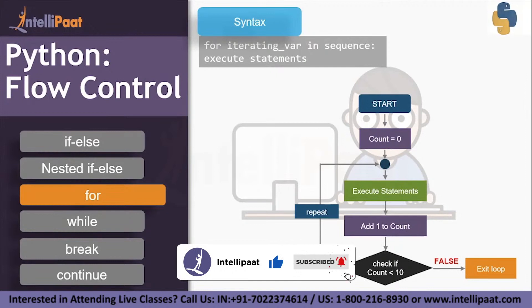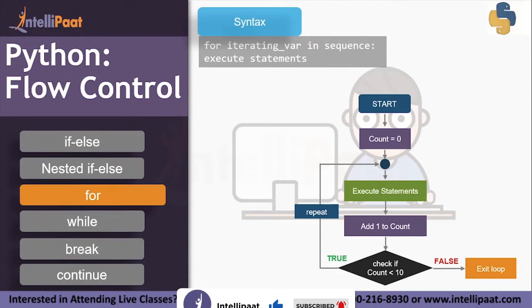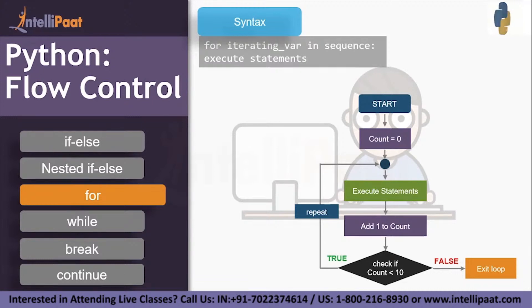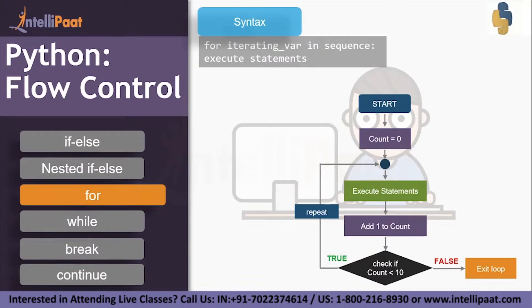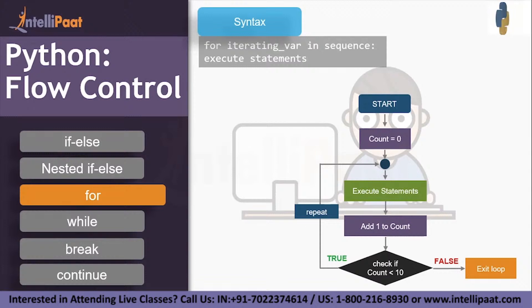Here's an example program. We start by defining a variable count equals zero, then execute a statement, then increment the value of count by one, and check the condition: if count is less than 10. Since one is less than 10, the condition is true, so we repeat and execute the statement again, increment count to two, and check if two is less than ten. We continue this until count reaches 10. When count equals 10, the condition becomes false and you exit the loop. This is how a for loop works.